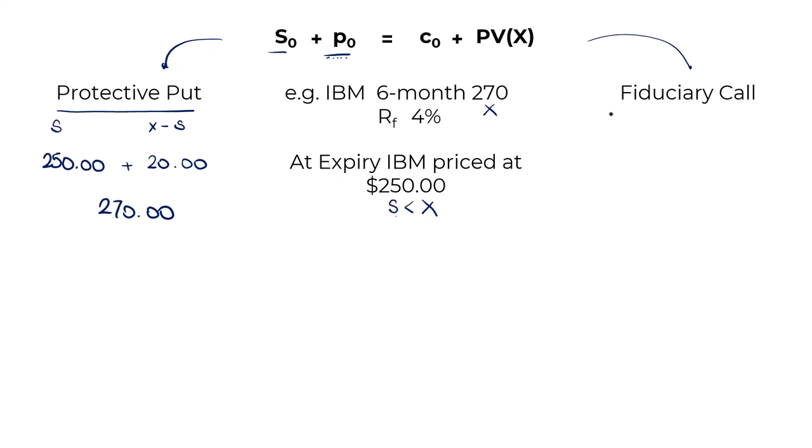What about the fiduciary call? The call option, that's the right to buy at 270. It's only worth 250. That is out of the money. That will be allowed to lapse and gives you nothing. PV(X), by definition, grows to X at maturity, the strike of 270. The fiduciary call pays off 270. When the underlying is worth less than the strike, they both pay off the same. What they pay off is the strike.